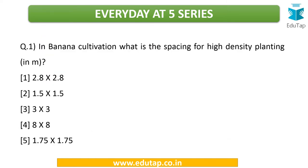Here is the first question for today. In banana cultivation, what is the spacing for high density planting? High density planting is where more number of crops is accommodated in a particular area. The answer for this particular question is 1.5 into 1.5 meters.